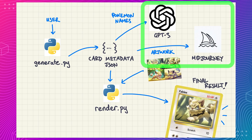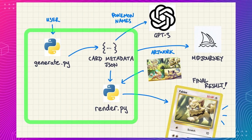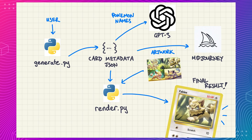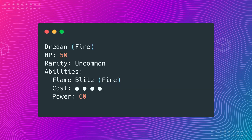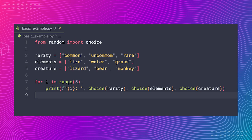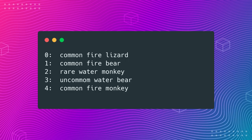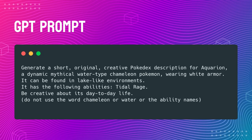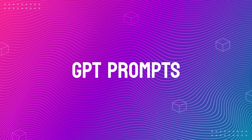With these two major pieces in place, I can build the rest of the app in Python. When you run the app, it will put together basic metadata for a Pokemon — its elements, rarity, number of abilities, number of evolutions, and creature type. This is relatively easy: we can have a set of strings for each possible value and have Python cobble together a random combination. Once we have the metadata, we create a prompt for GPT-3 to come up with a name and description for this Pokemon.